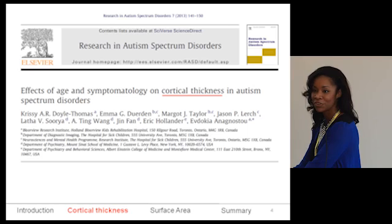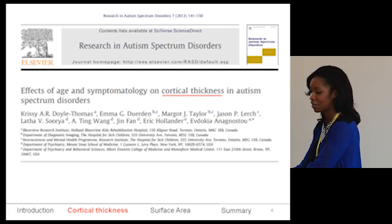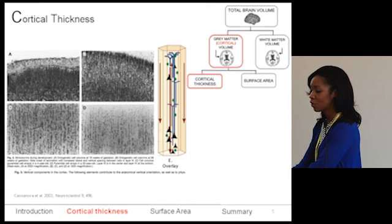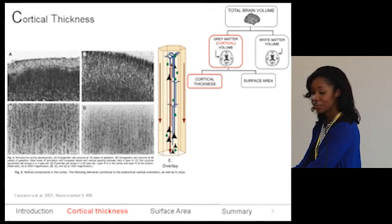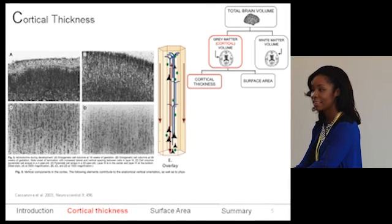In a study we published earlier this year, we looked at cortical thickness, which is one contributor to gray matter volume, and how it changed with age and how it related to symptomatology. Cortical thickness can give us an indication of the number of columns in the cortex. Cells in the cortex arrange themselves in columns, communicate with cells in that column, and also receive information from cells in neighboring regions.